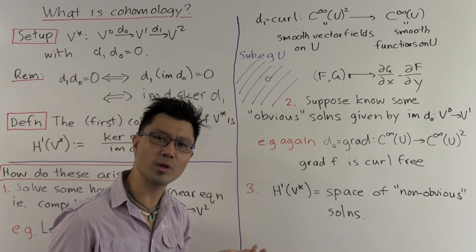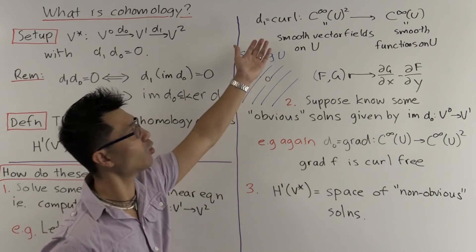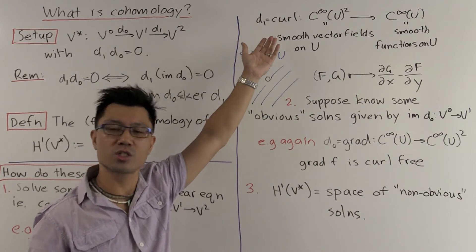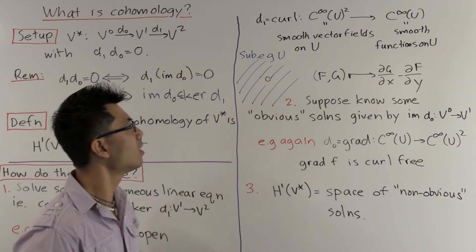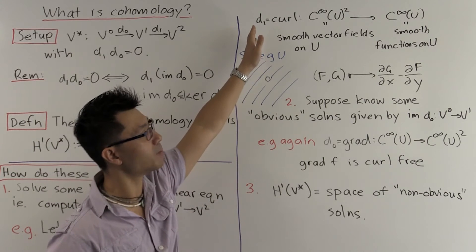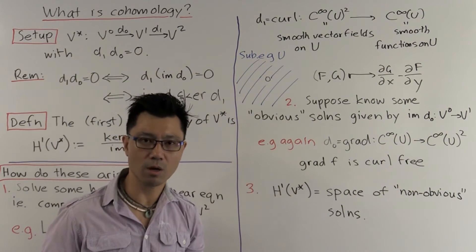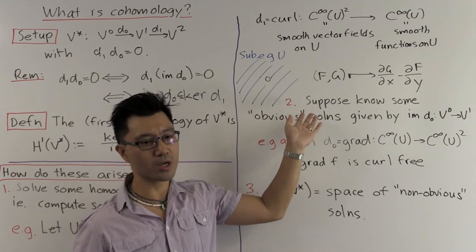So basically a vector field is given by F, G like that. And the curl, you might remember, is given by this formula, dG dx minus dF dy. And of course this is a very natural question, right, to compute the kernel of this map. You're just looking at all the curl-free vector fields.